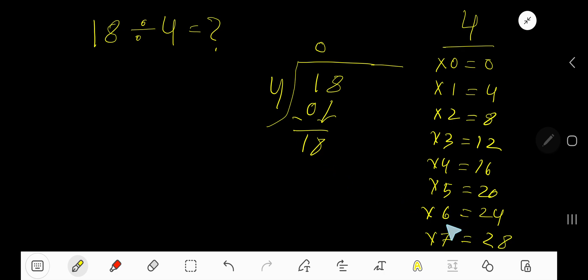4 goes into 18 how many times? 4 times 4 is 16. Write 4. 4 times 4 is 16. Subtract 2.